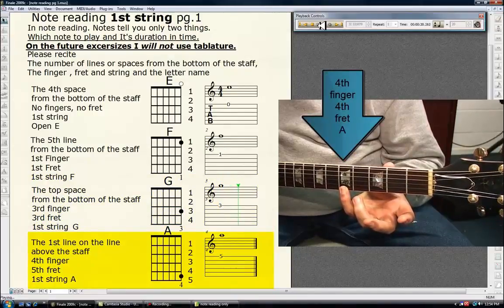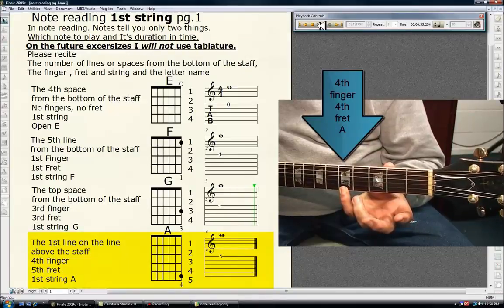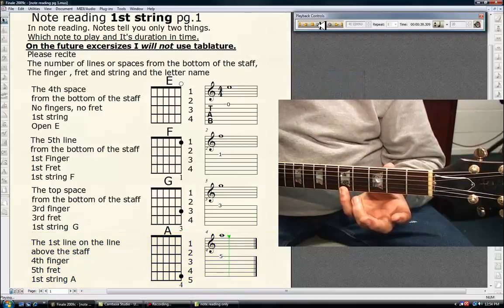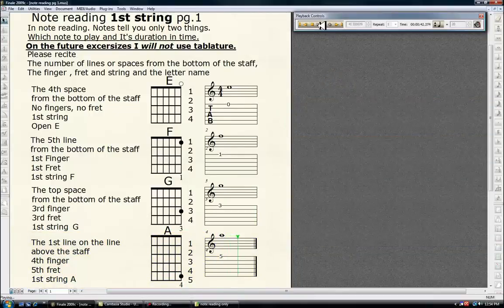staff, fourth finger, fifth fret, first string is A. You can go over this as many times as you want. Move on to the second string.